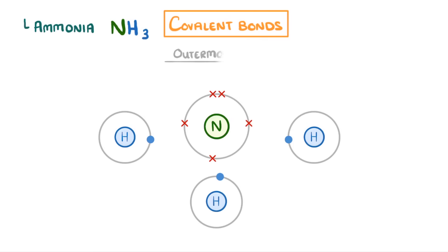In our example, we'll only draw the outermost shells. The next step is to think about how these atoms can fit together, so that all of them have full outer shells.